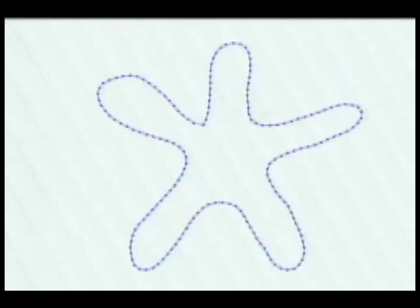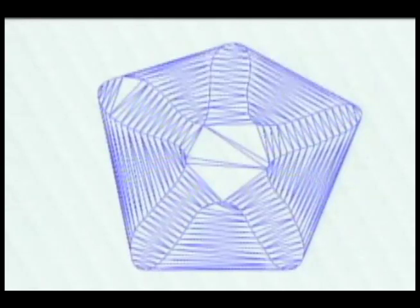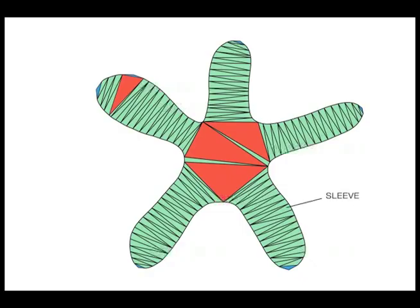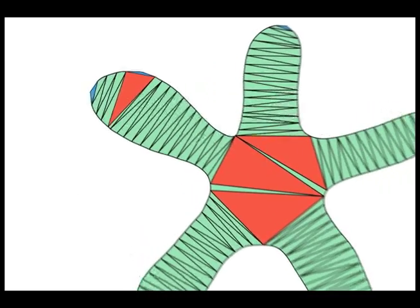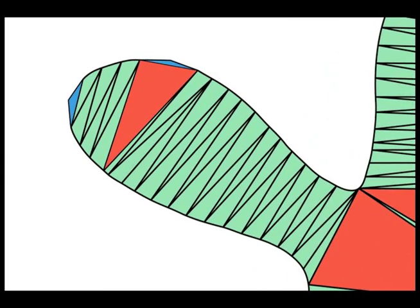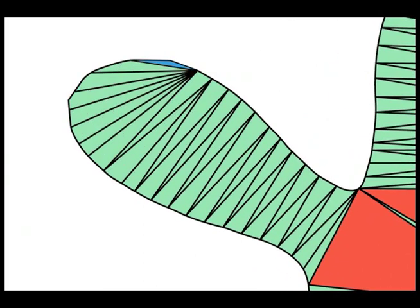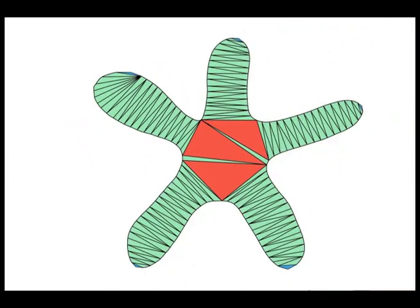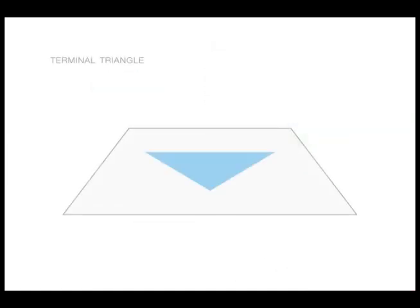It then calculates the constrained Delaunay triangulation. The triangles formed within the closed curve are divided into groups according to their position. In order to obtain better results, some triangles are modified and rearranged. Each one of these groups receives a different treatment during the mesh construction.